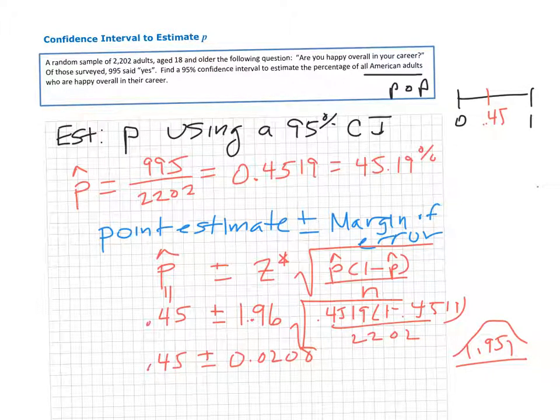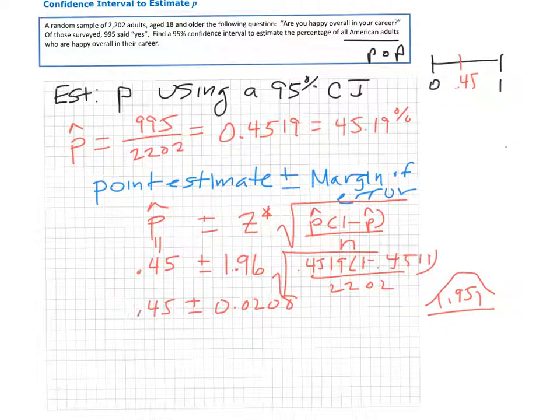If you put this together in a confidence interval, what you want to do is add and subtract 0.0208 from 0.45.